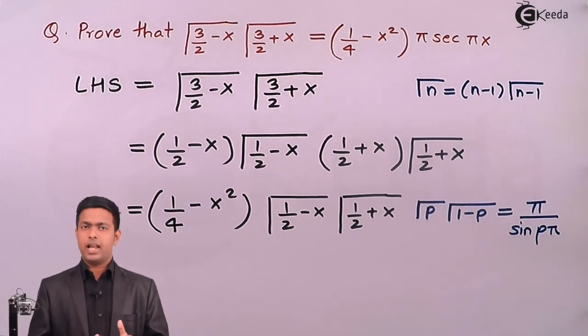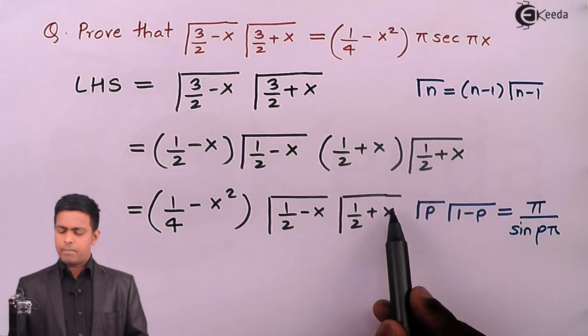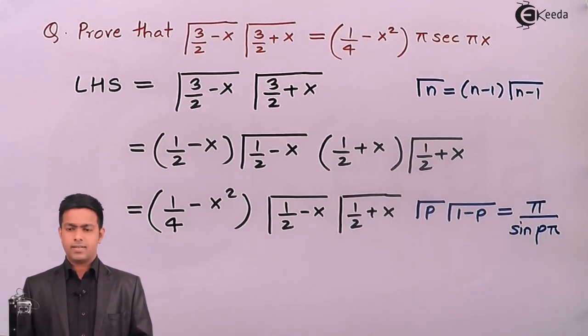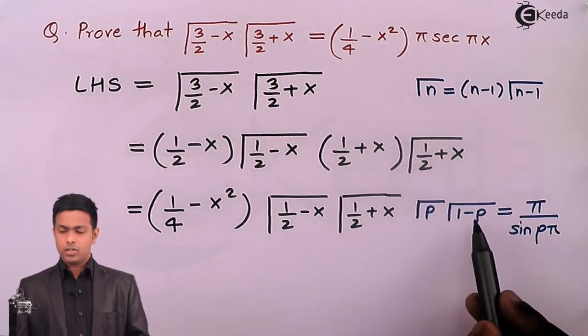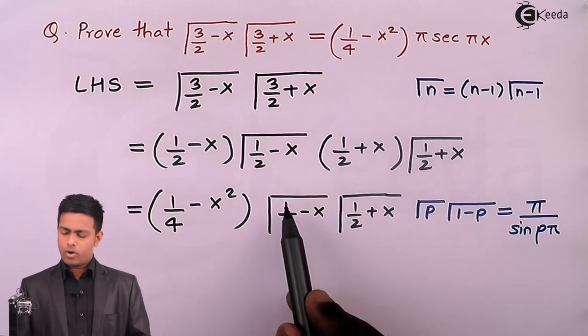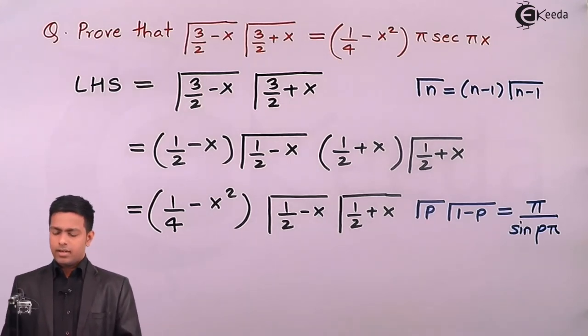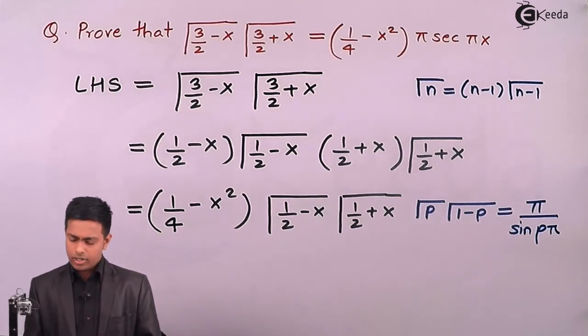We just have to check whether these two gamma functions have the values as p and 1-p or not. Let's assume that the value of p is 1/2 + x. So if p is 1/2 + x, then 1 - p, that is 1 - (1/2 + x), will give us 1/2 - x. Yes, it is exactly matching with gamma(p) times gamma(1-p), so we can definitely use this property.